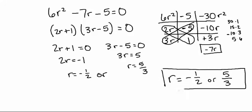Hopefully that was helpful. Just to recap: start by factoring out any common terms. Then use the tic-tac-toe method — put your a term here, your c term here, and your a times c term here. Then pick the two middle terms that multiply to a times c and add up to equal your b term. Make sure everything multiplies across and up and down. Thank you for watching, and I hope that was helpful!